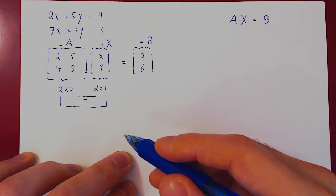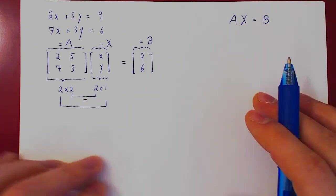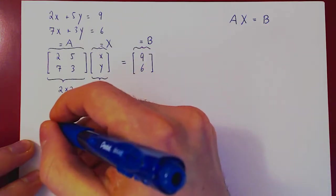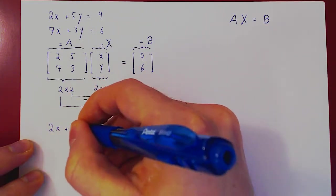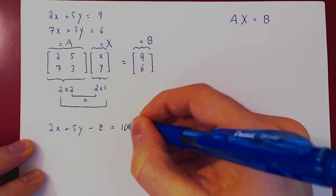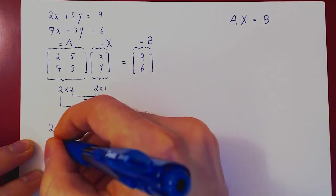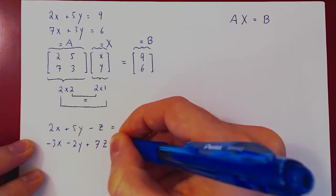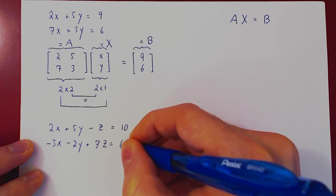Let's do two other short examples. Suppose we have now three variables, two equations. So we'll go with 2X plus 5Y minus Z equals 10. Negative 3X, negative 2Y plus 7Z equals, say, 6.